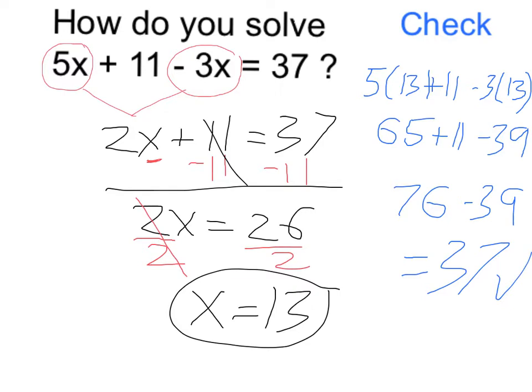The critical step that I did was right at the beginning, combining my like terms, remembering that this is a minus 3x, so I need to do 5 minus 3, which gave me the 2x. Thank you.